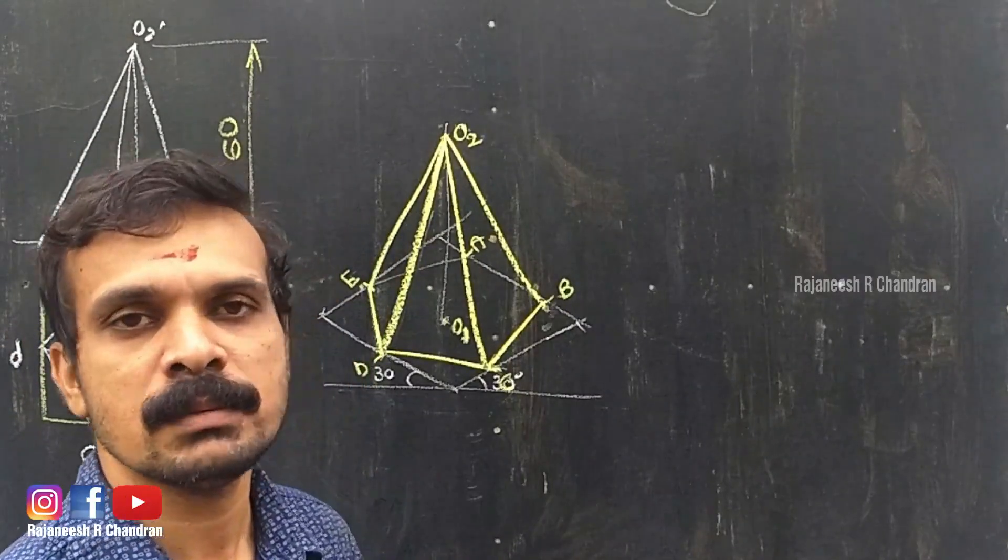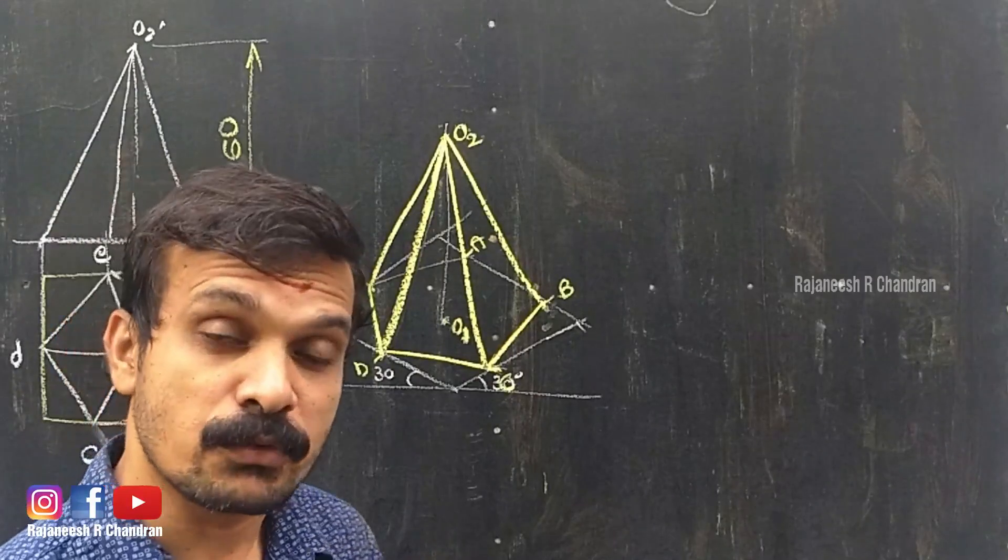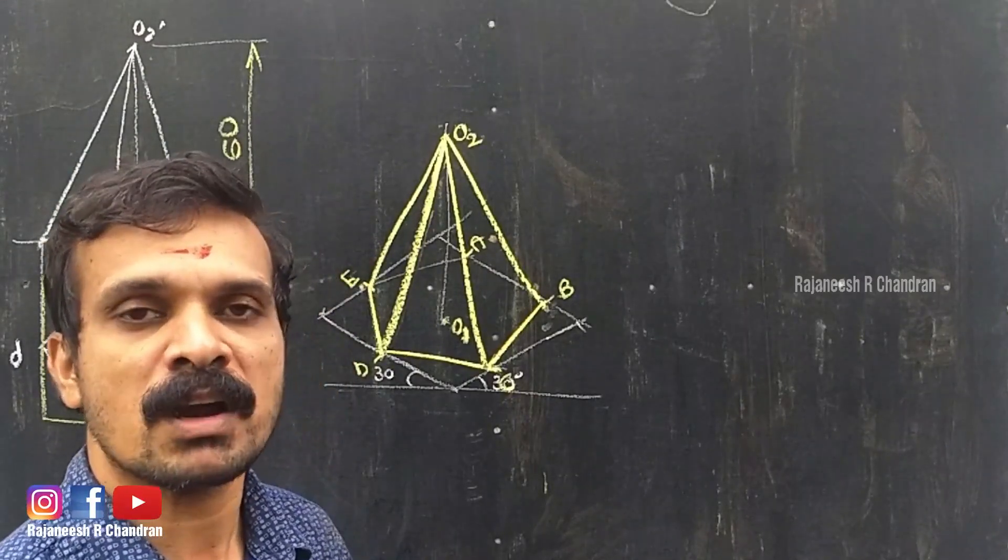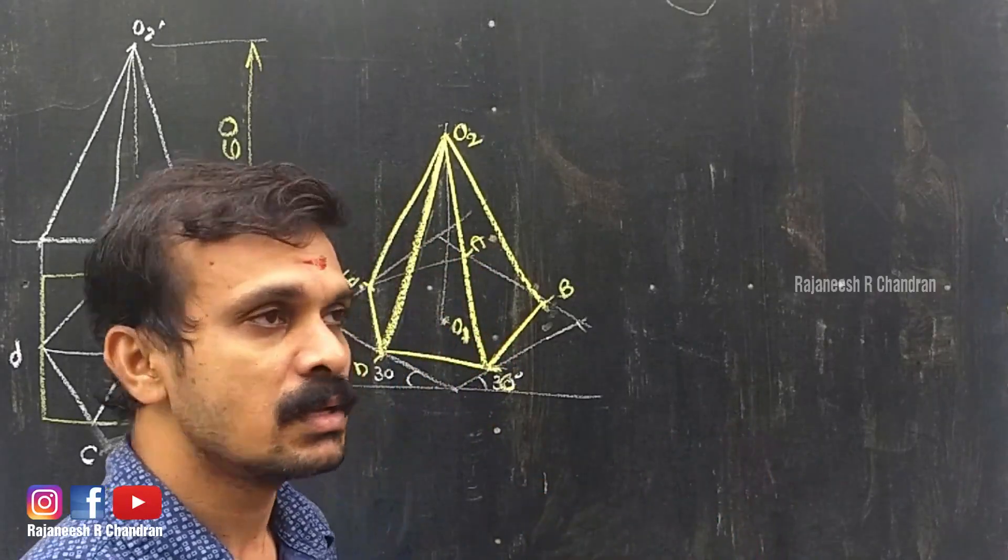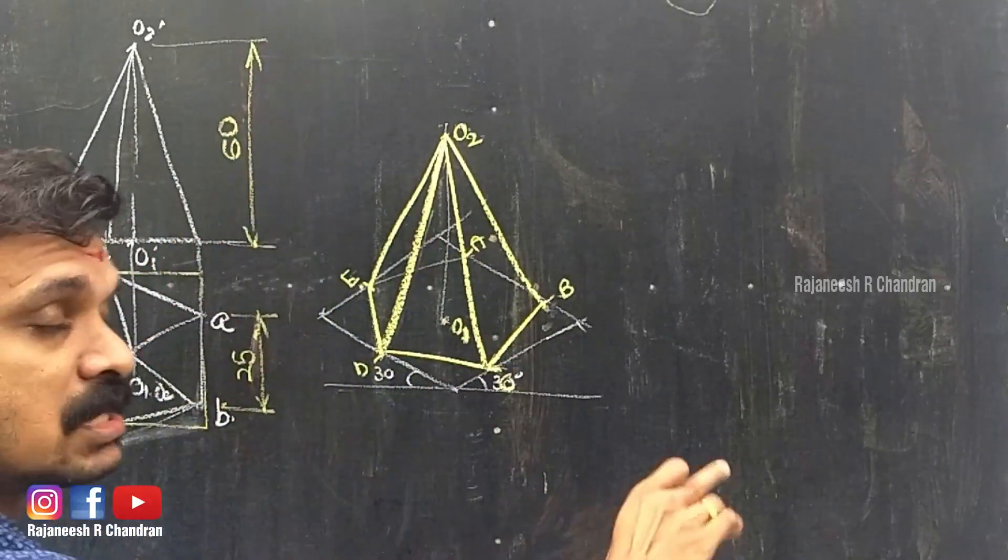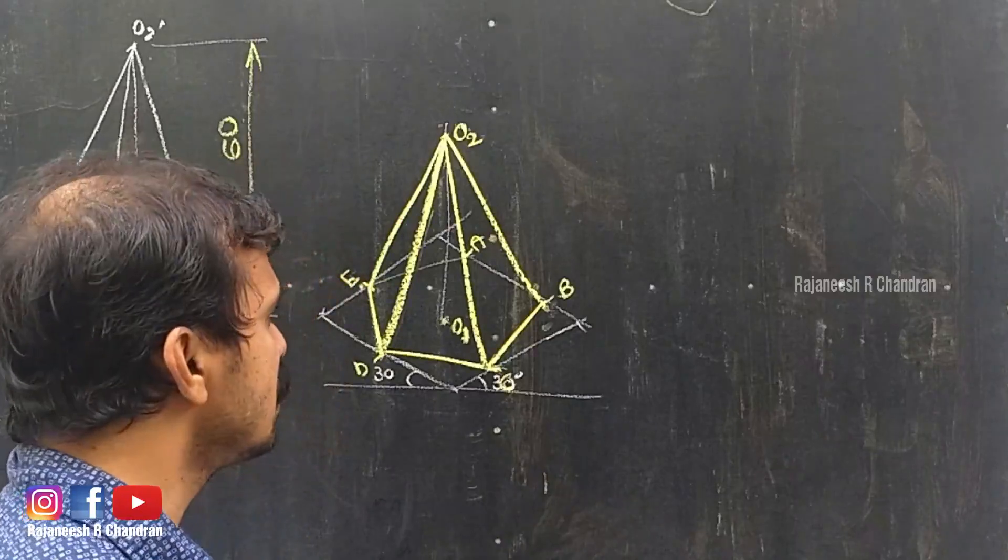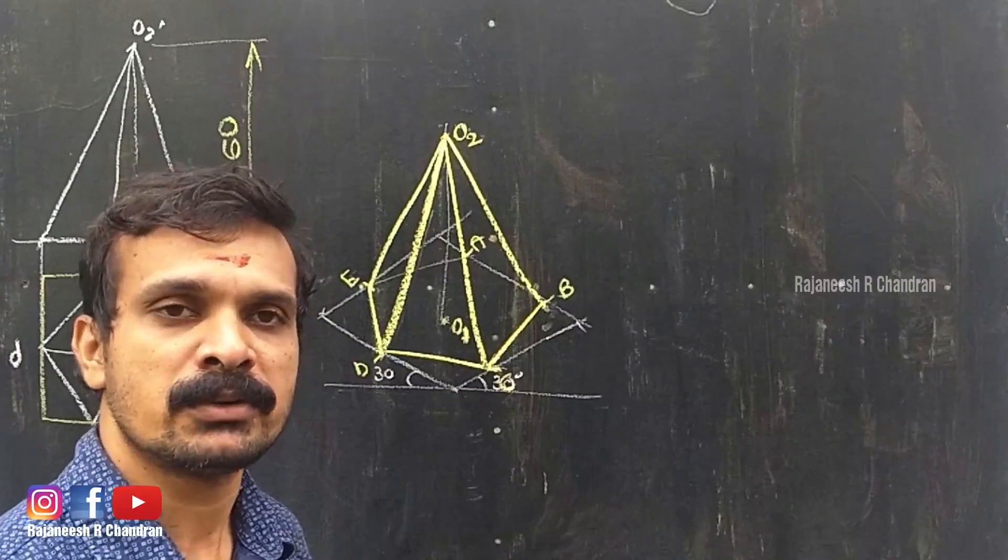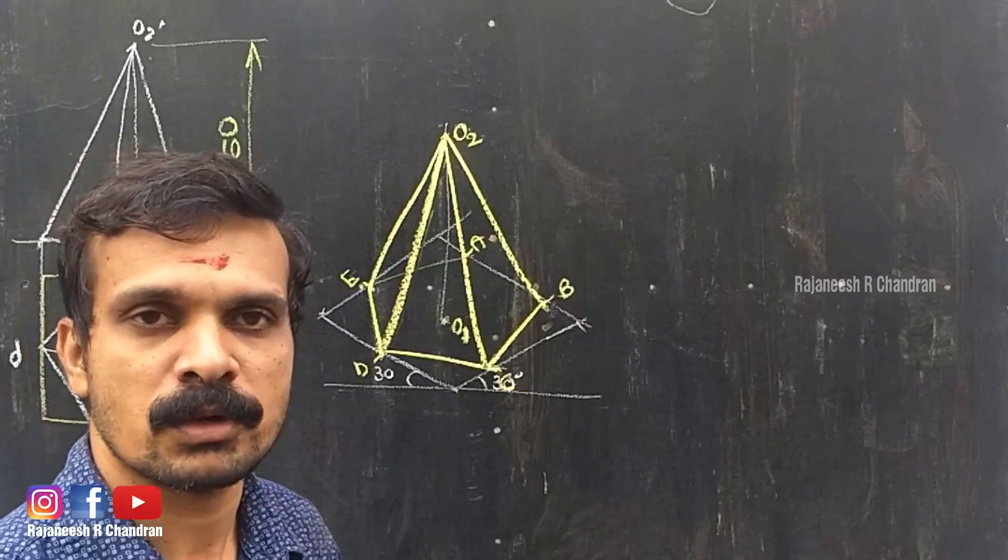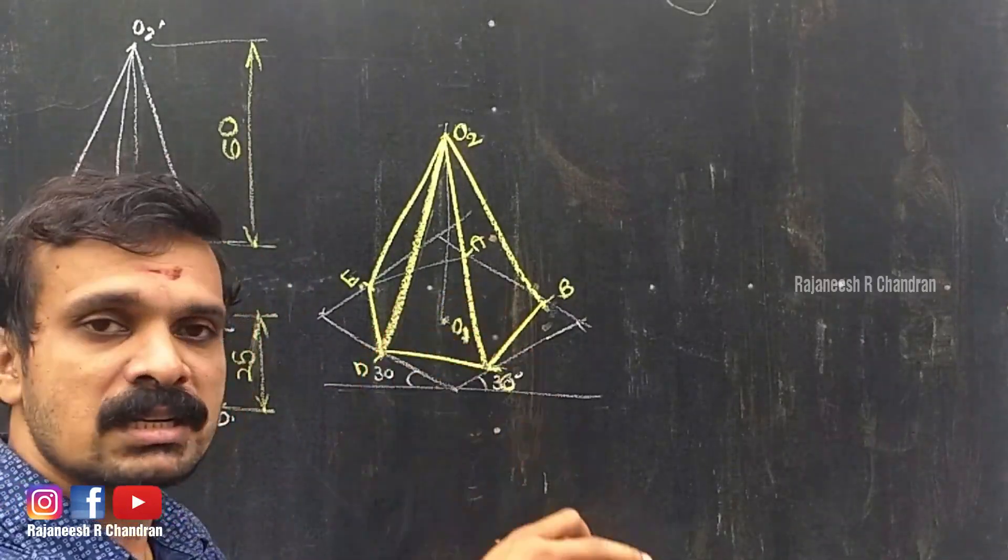For constructing an isometric projection, what we have to do is first draw the isometric scale having a maximum value of 60 or more, then convert each distance by multiplying with 0.816 and draw the corresponding projection.